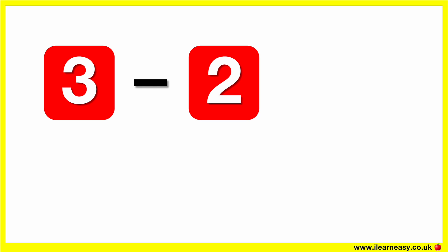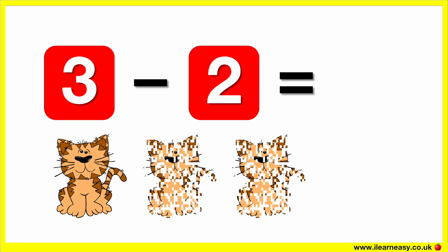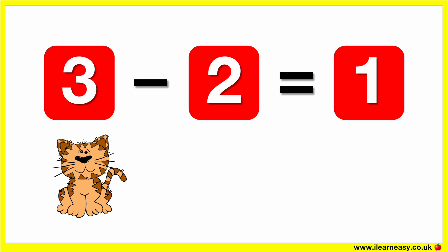Three minus two equals. Here are three cats. Let's take away two. Now there is one cat. So, three minus two equals one.